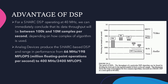Analog Devices produces the SHARC-based DSP, ranging in performance from 66 million operations per second with 198 million floating point operations per second, up to 400 million operations per second with 2,400 million floating point operations per second.